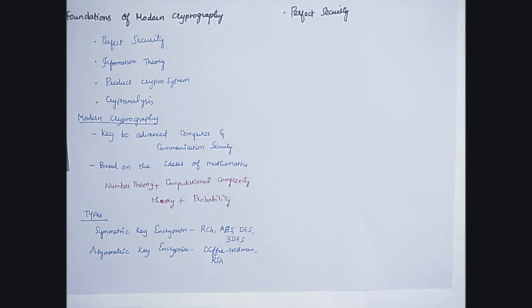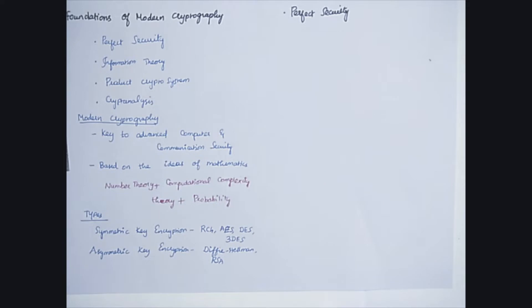Why do we need to study modern cryptography? Because it is a key to advanced computer and communication security, which means the security mechanisms we use today are based on modern cryptography. This concept is derived from the basic ideas of mathematics such as number theory, computational complexity theory, and probability.